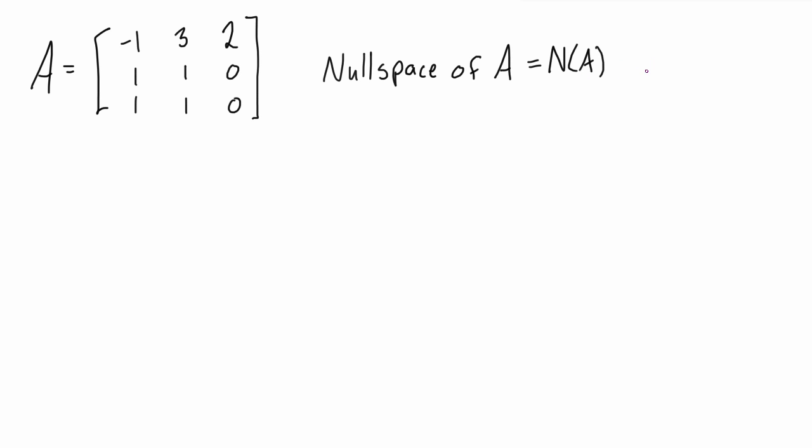And the null space of a matrix is the set of vectors that form the homogeneous solution. In this case where we have A, we set it up as an augmented matrix and set the whole right-hand side to zeros.